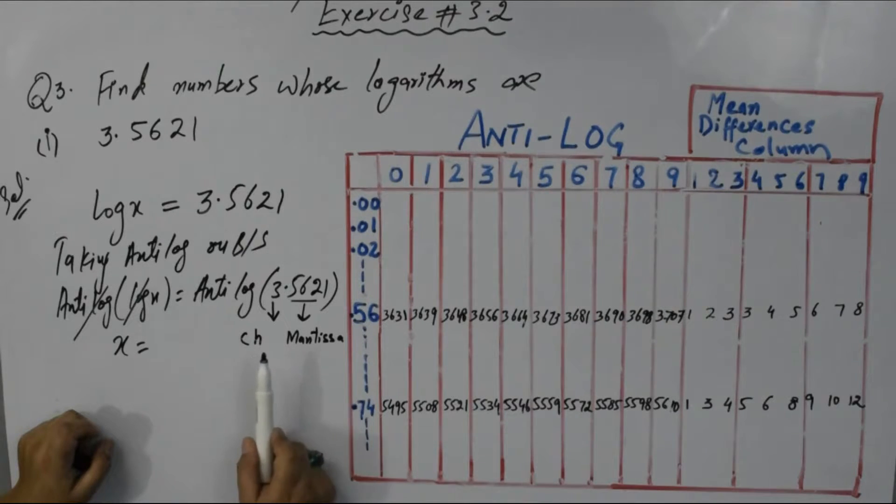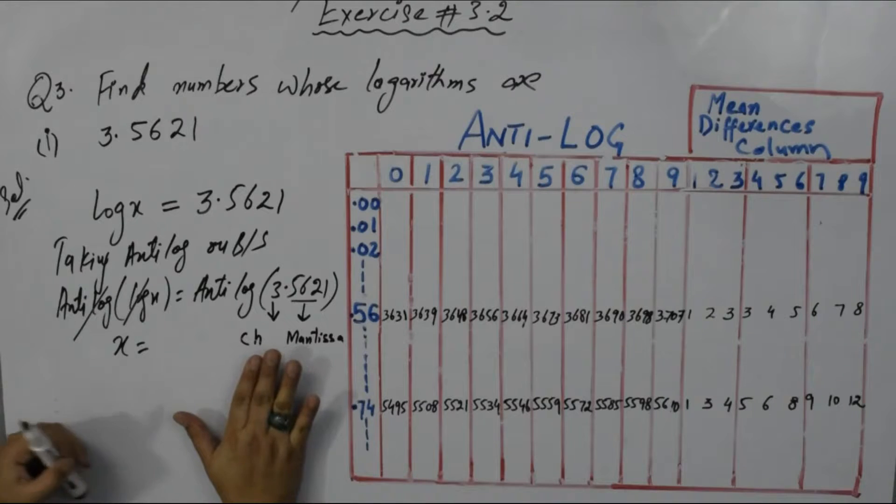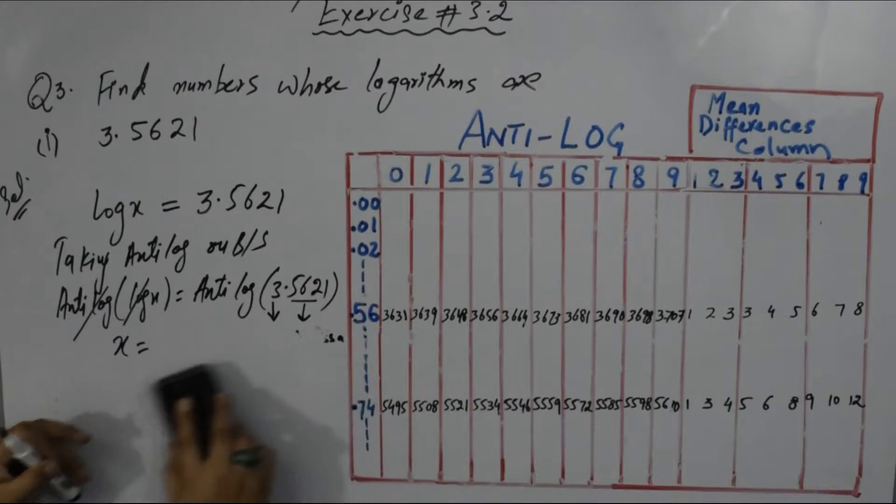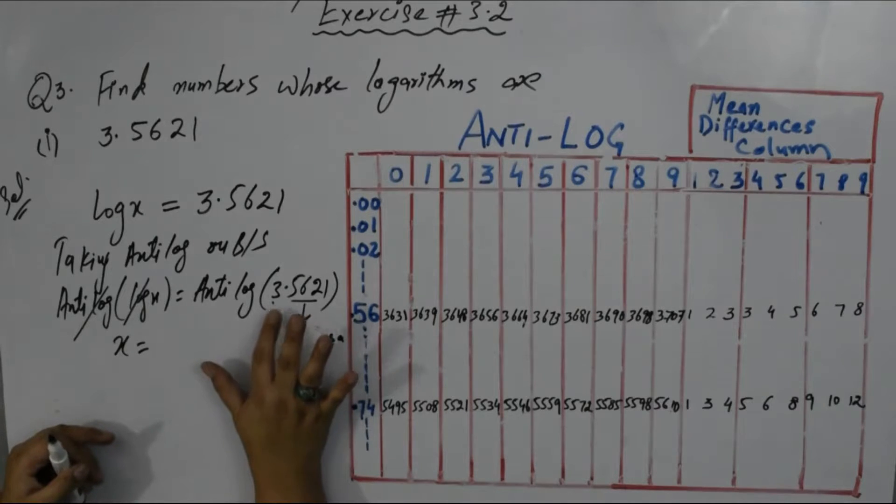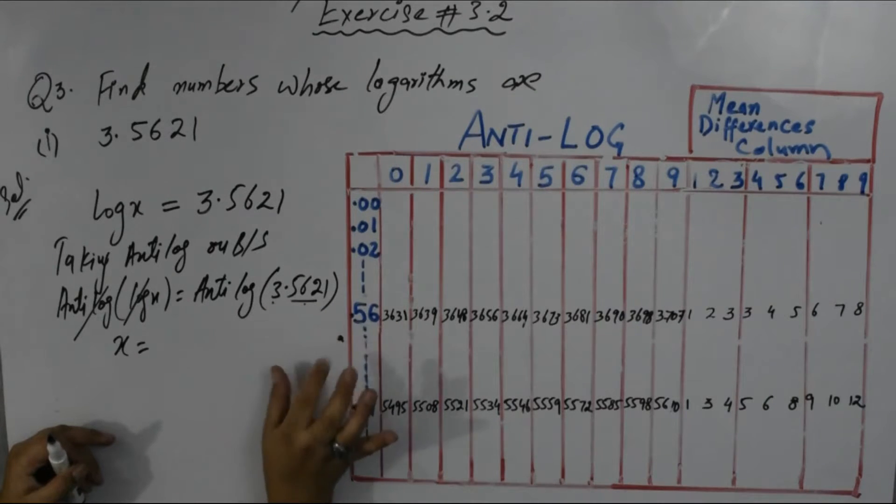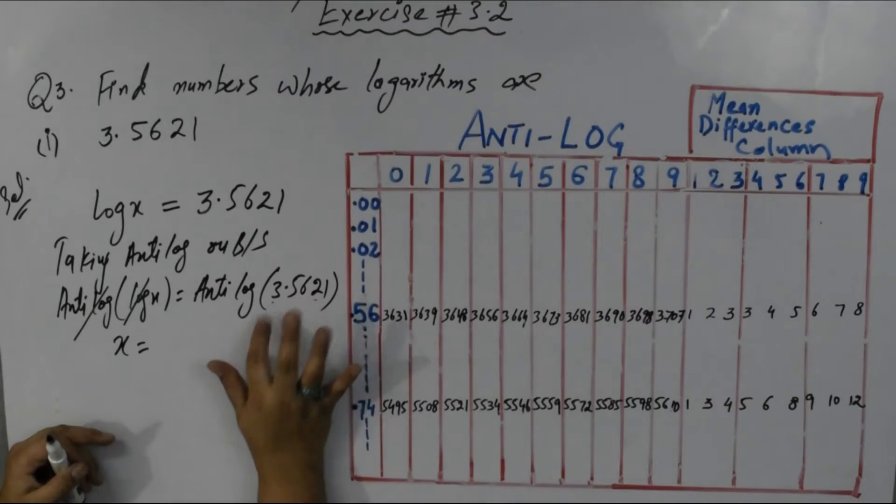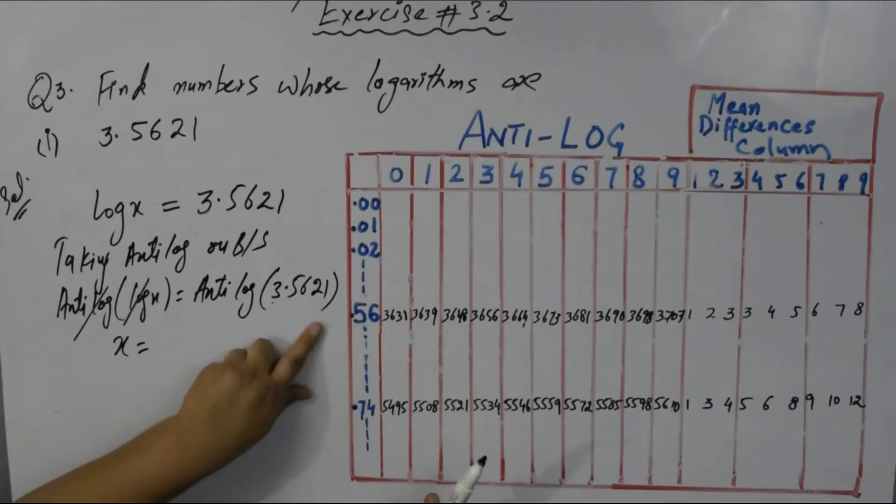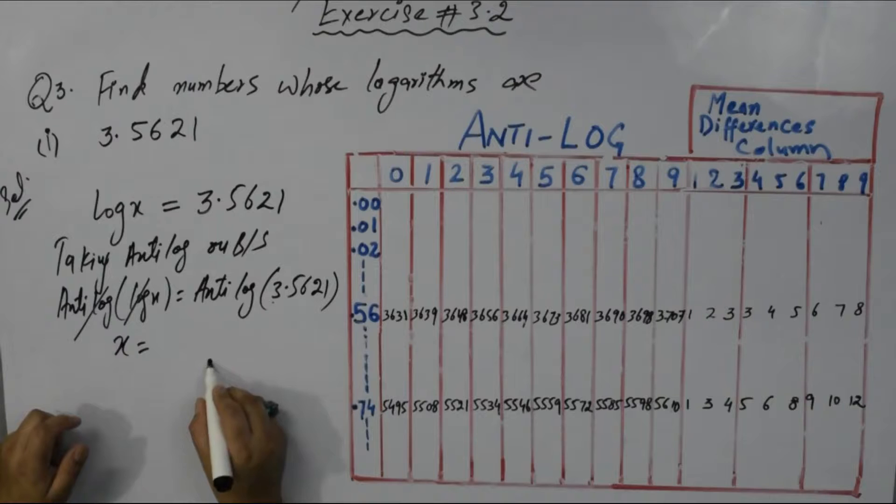This characteristic shows position of decimal - where I have to put decimal in anti-logarithm. Mantissa we will calculate from anti-logarithm table. We will leave characteristic aside for now, and with the help of mantissa calculate the number.